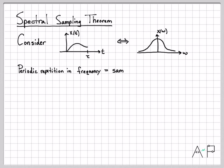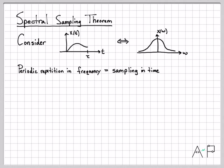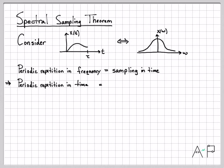From our work with sampling, we know what happens if we repeat the frequency content in the frequency domain. Any time we replicate the spectrum in frequency, that gives us samples in time. Periodic repetition in one domain gives samples in the other domain. So far we've seen that periodic repetition in frequency gives samples in time. Due to time-frequency duality, it shouldn't be too surprising that if we periodically repeat in time, we actually get samples in frequency.